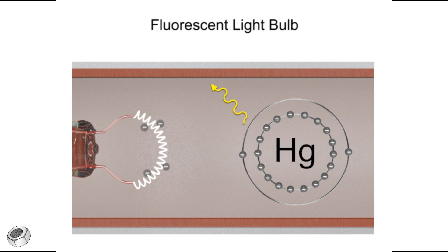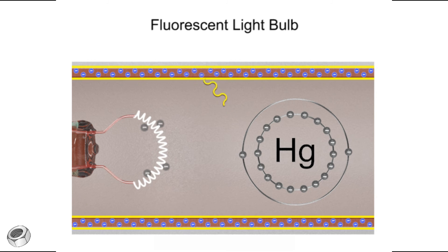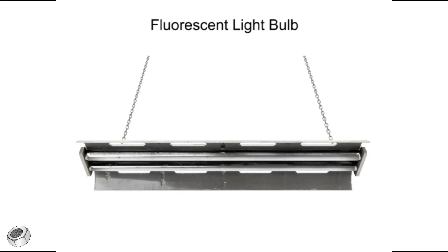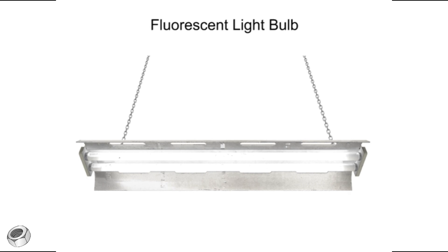This photon is then absorbed by the electrons of the phosphor powder lining the tube. Again, exciting electrons in the process. This excitation is followed in turn by de-excitation and the release of a low-frequency photon. The photons from all these reactions combine to produce the glow of white light, characteristic of fluorescent bulbs.